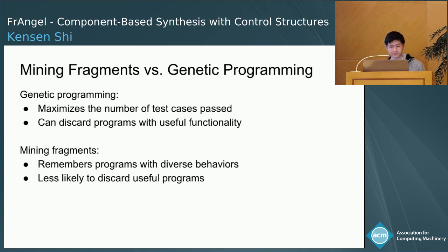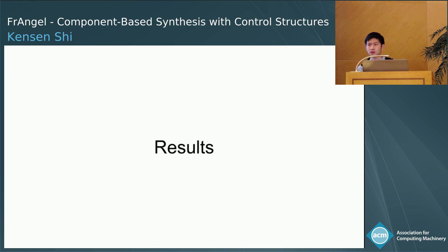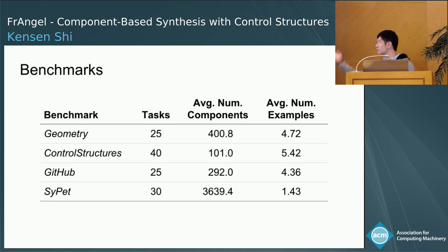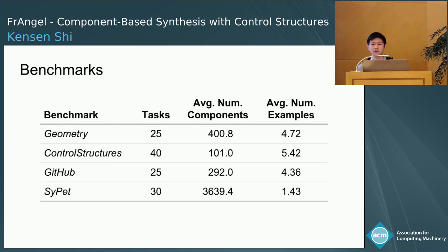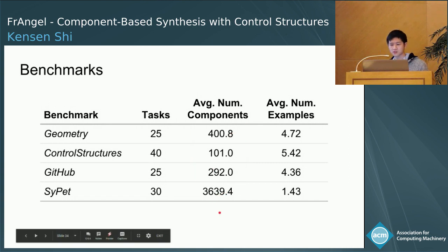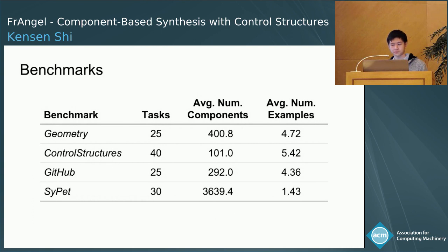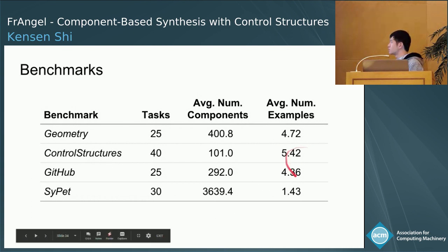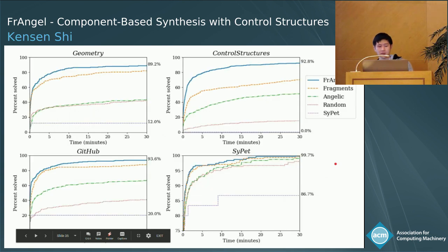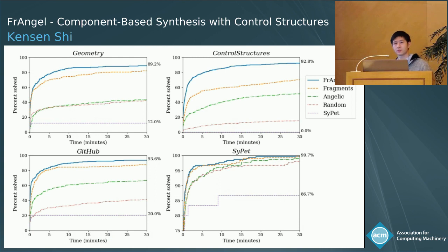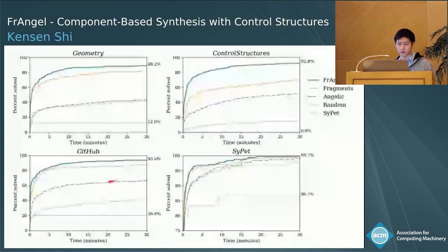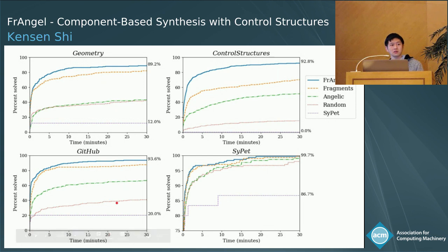Now let's go through some of the results. To evaluate Frangel, we collected a set of 120 tasks organized into four categories, with the last category containing all the benchmarks used in the CyPet paper. These benchmarks contain hundreds to thousands of components, and tasks are specified using only a handful of examples. These plots show the percentage of tasks solved over time. Frangel is in the bold blue line, and we compare against a variation that only mines fragments, one that only uses angelic conditions, one that uses neither (the random search baseline), and CyPet. Frangel is consistently the best in our benchmarks.